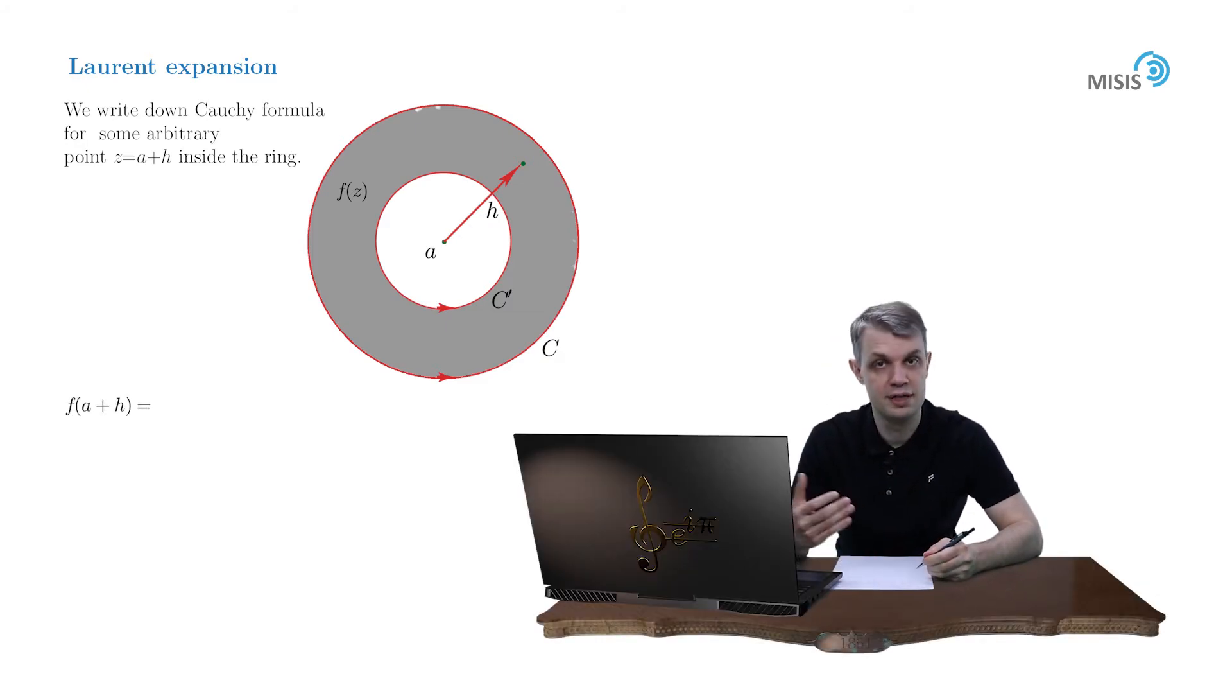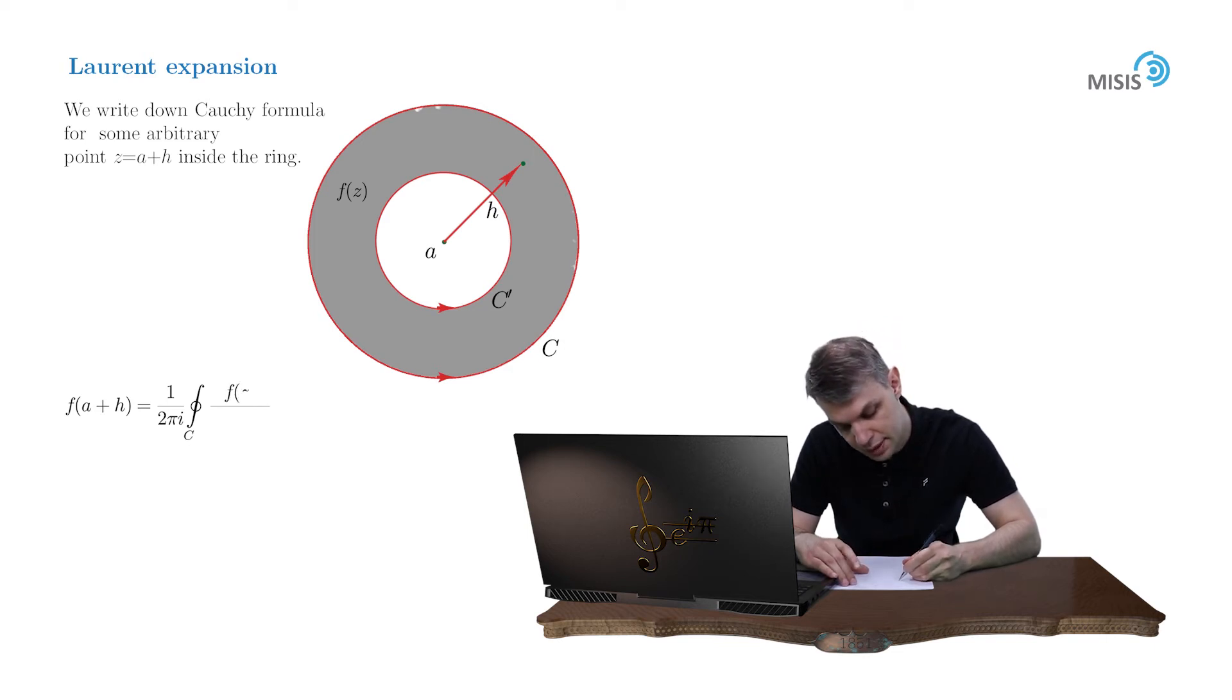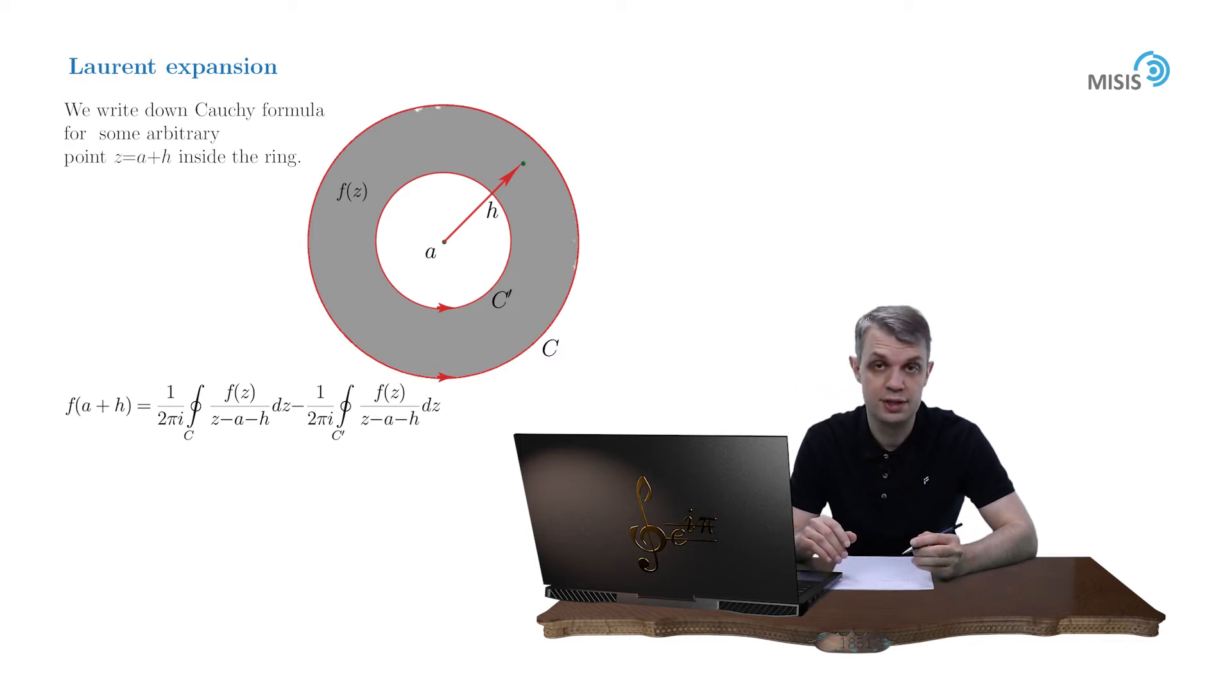And it is given by the difference of two integrals. The first integral, the typical Cauchy type integral, but taken along the outer circle, F of Z over Z minus A minus H, DZ. And the second integral is the same thing, but taken along the inner circle. Now the idea is to expand both of these integrals into powers of H.